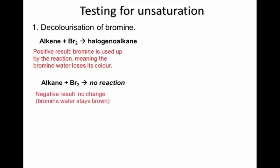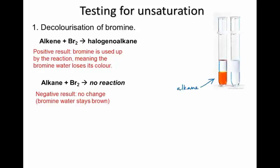In contrast, if bromine water is added to an alkane at room temperature, no colour change occurs because there is insufficient activation energy to cause the substitution to occur, so the water remains brown because the bromine is not being used up. We'll be doing this test as a practical this week. This is what it would look like if it was an alkane — no reaction has occurred, and the bottom layer is the bromine water, still with its colour. This is what it would look like if you had added an alkene — the brown colour has disappeared from the bromine water, and what you have in the top layer is now a halogeanoalkane instead of the original alkene.